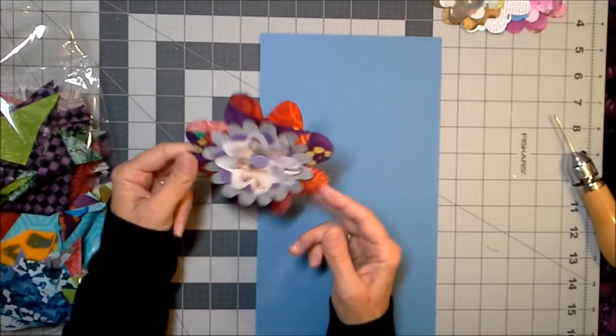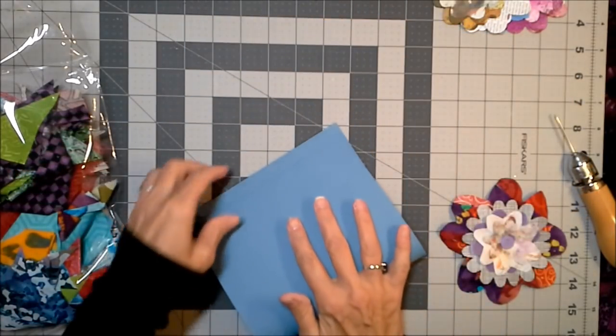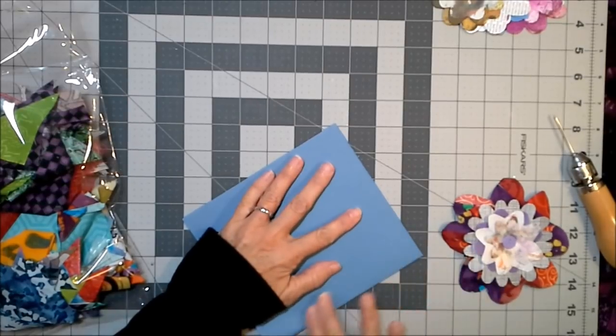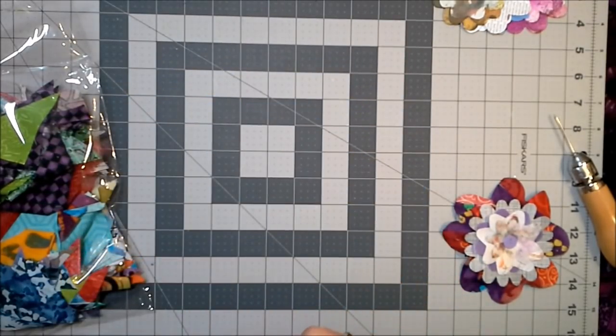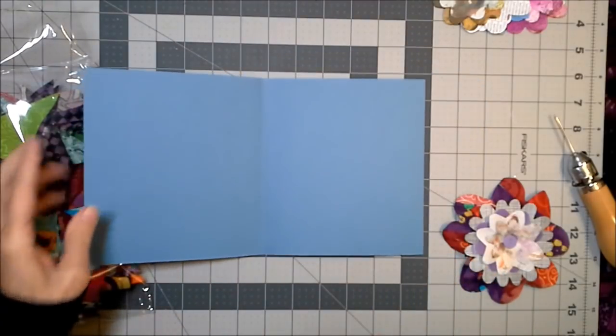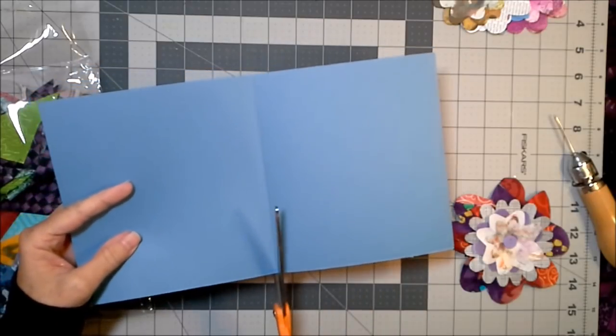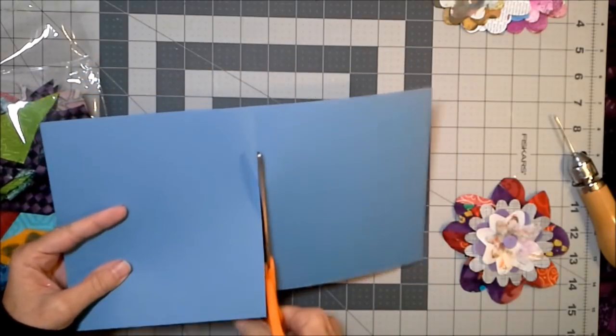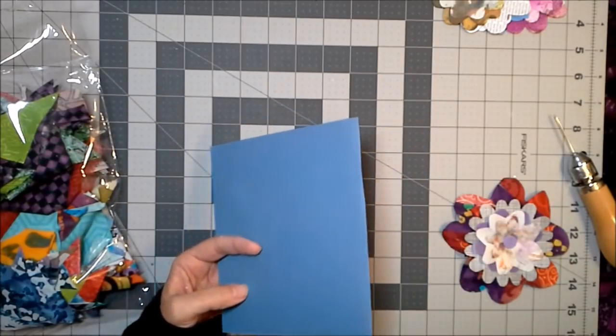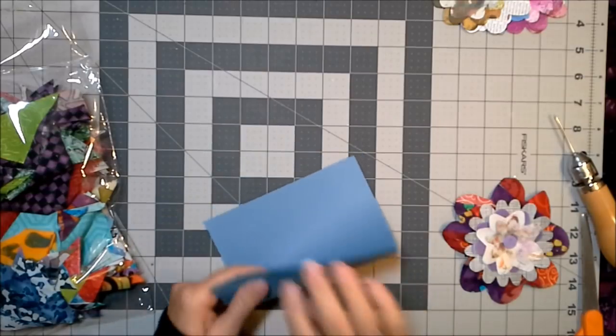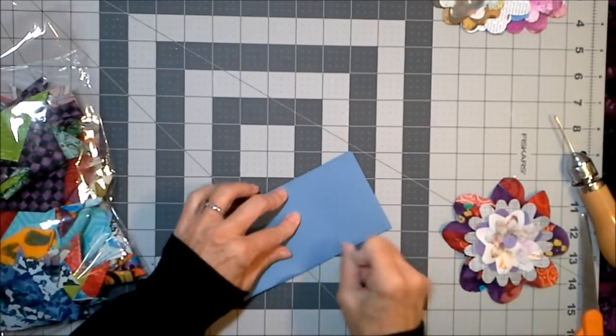First thing you're going to need to do is get some pretty heavy weight cardstock. I'm not very good with weights, I don't know what weight cardstock this is, but it is pretty heavy. I just think if you tried to use anything super thin it might not work as well. We're just going to make a simple paper flower.